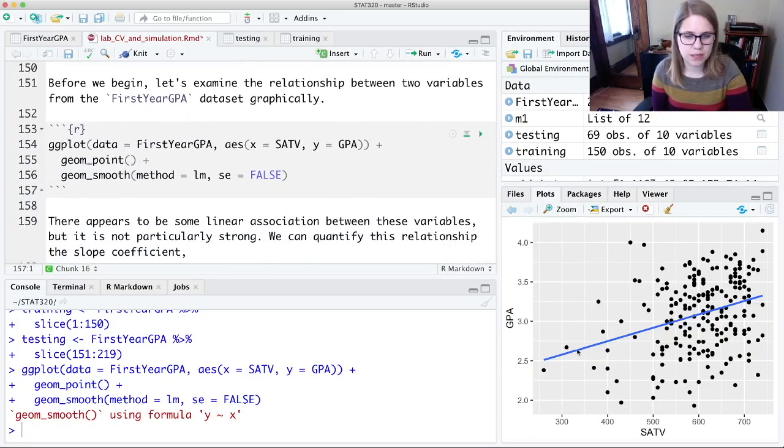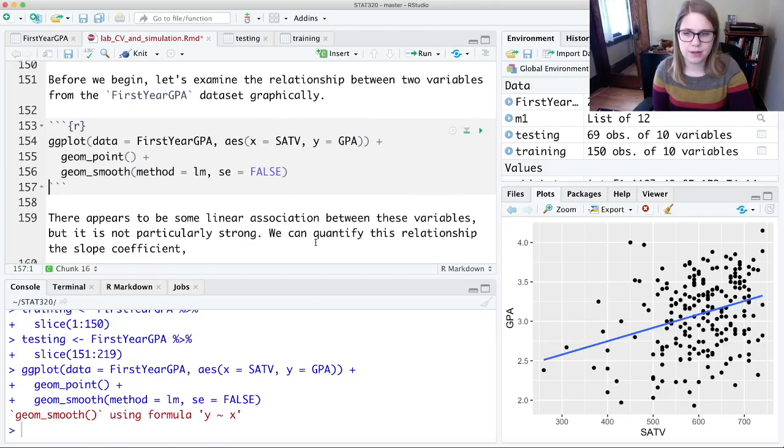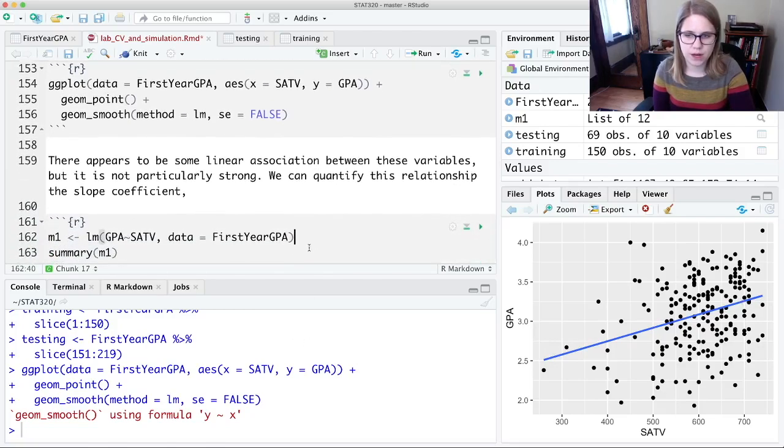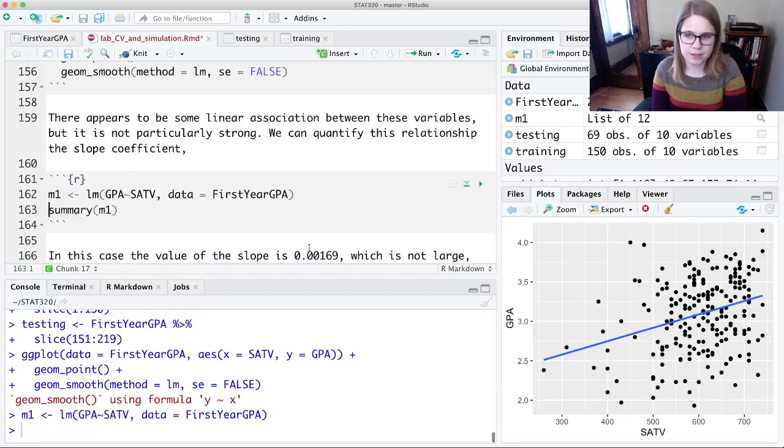And it looks to me like there is a moderate positive linear relationship between these two variables. And so if we wanted to, we could fit a linear model, trying to predict GPA by SATV, and we could look at the summary.